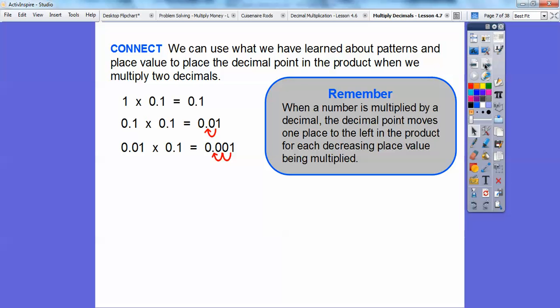When a number is multiplied by a decimal, the decimal moves one place to the left for each decreasing place value being multiplied. So what I like to do is just count the decimals. If here is two decimals, here is one more decimal, it's three decimals over. So if we started right here, just multiply one times one and then move it three places over. One, two, three, and it gives you 0.001.